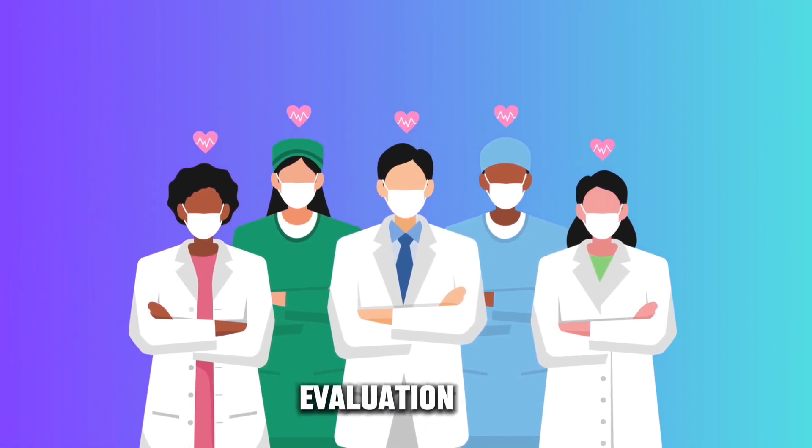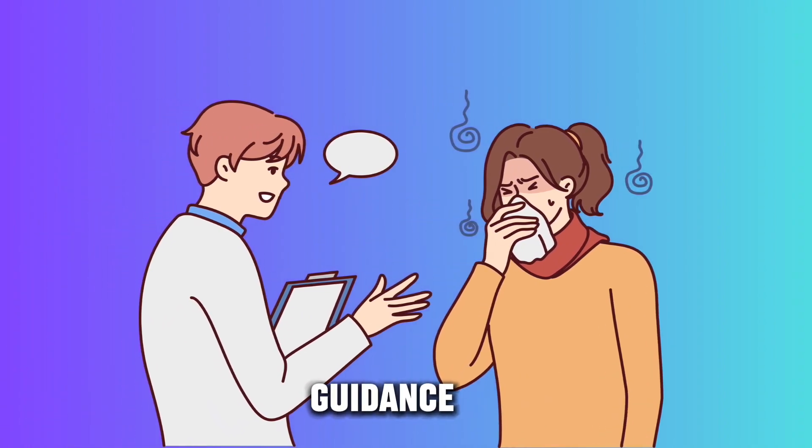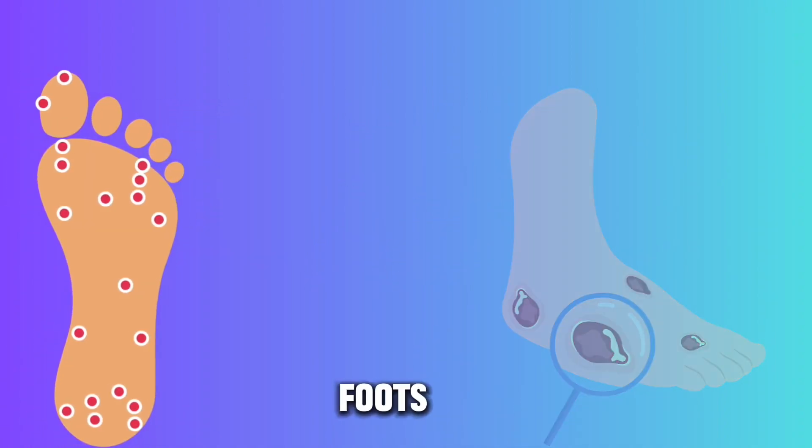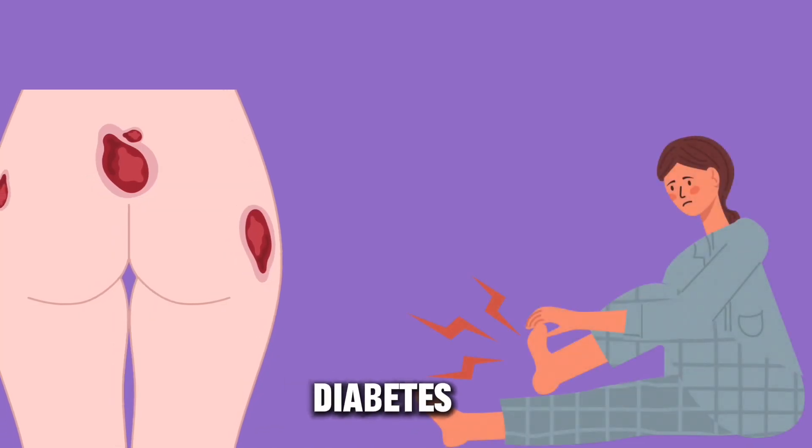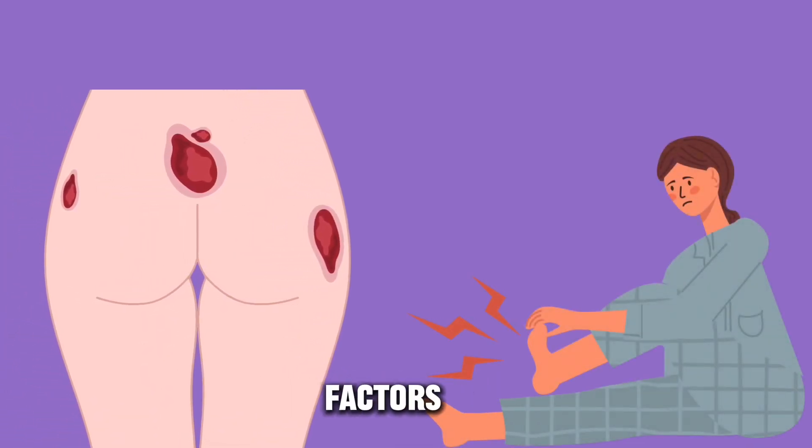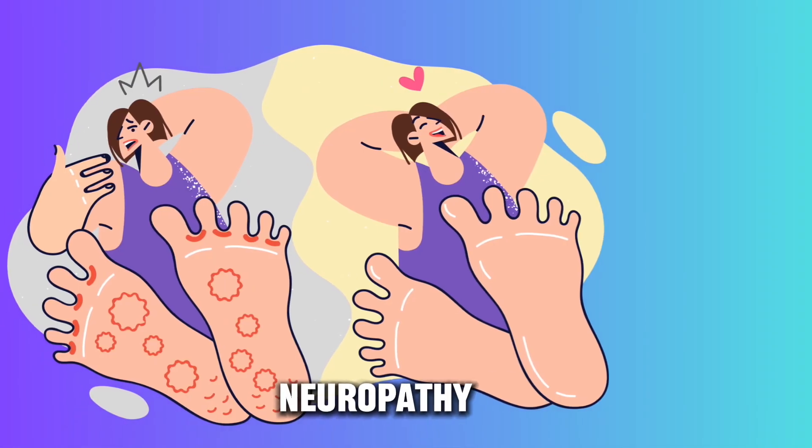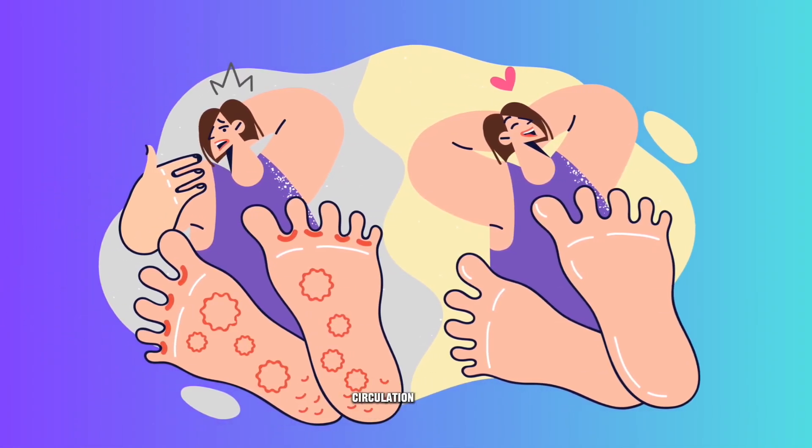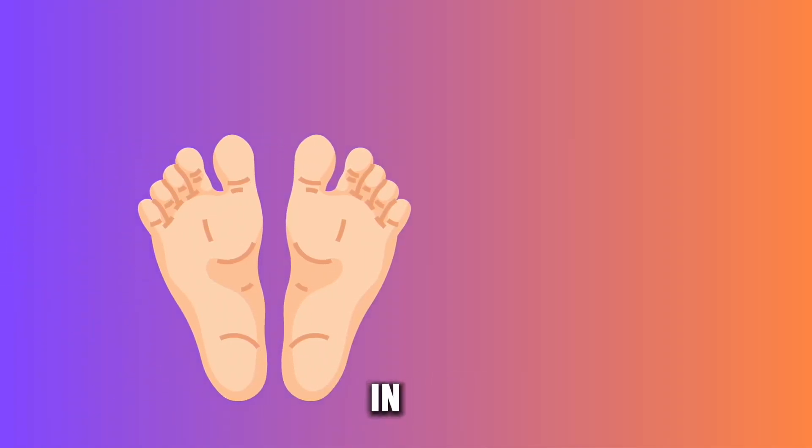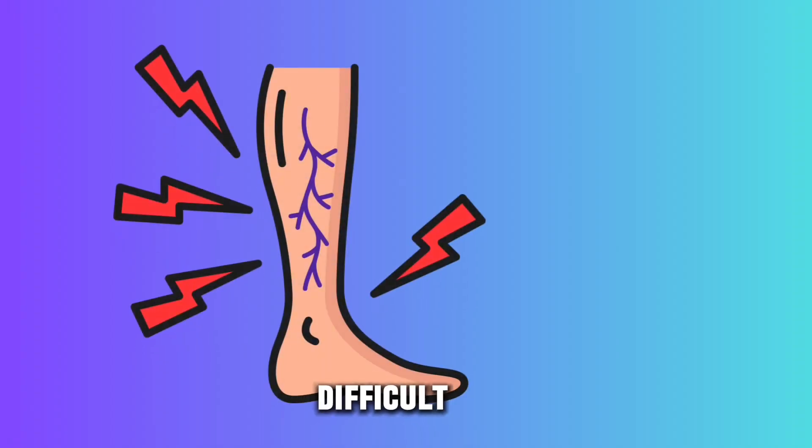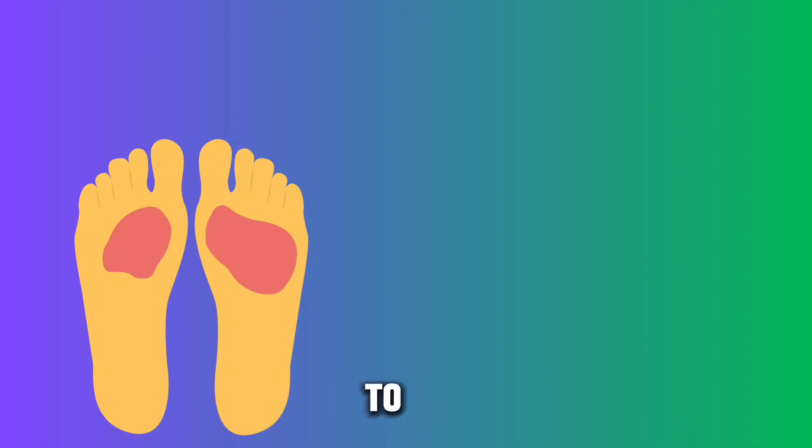And the last: foot sores or wounds. These are common complications in diabetes, particularly due to a combination of factors like neuropathy (nerve damage) and poor circulation. Neuropathy can cause reduced sensation in the feet, making it difficult to notice injuries or pressure points that lead to sores.